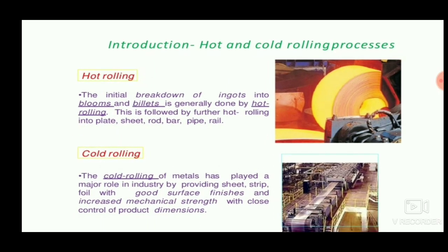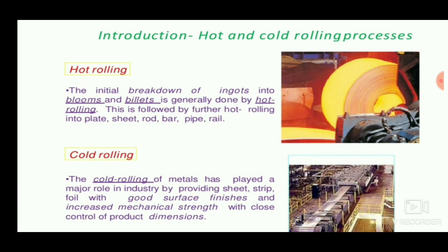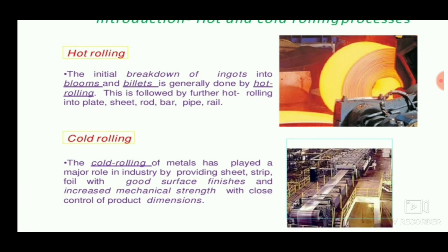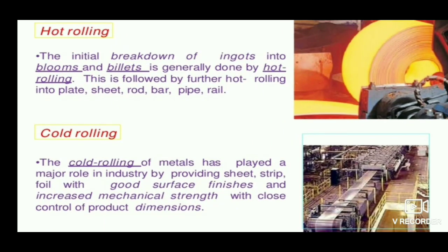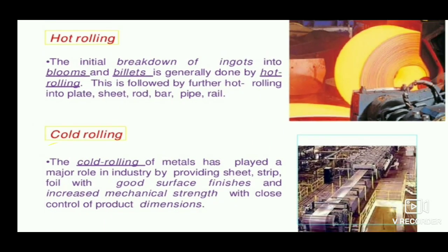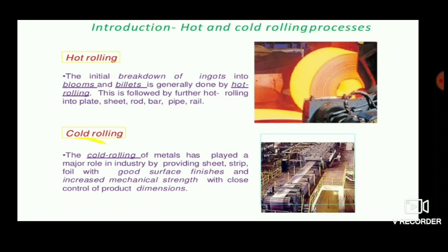There are generally two types of rolling. Hot rolling is the initial breakdown of ingots into blooms and billets — heat is applied and the ingots are processed. In cold rolling, sheets and plates are produced with a good surface finish.